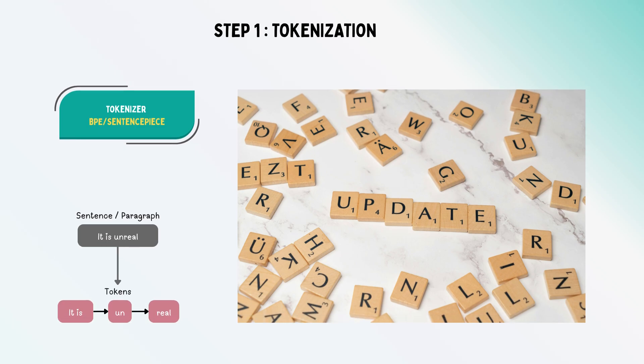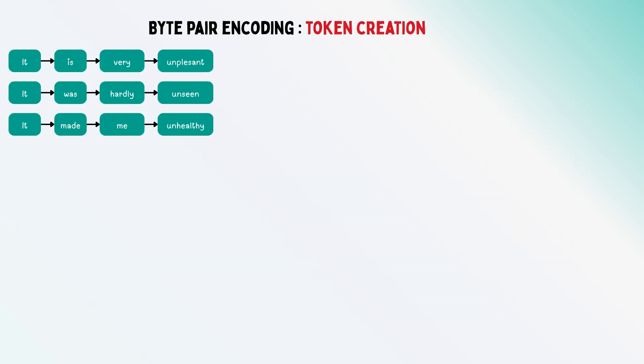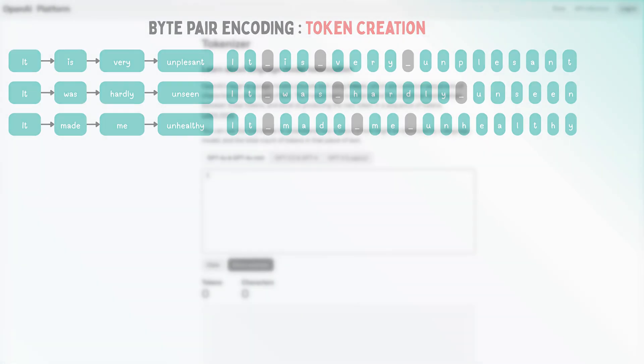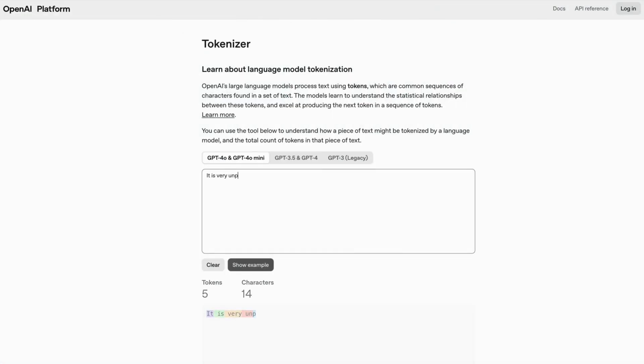In this stage, we look at how to break sentences into tokens. Byte pair encoding is one of the most common tokenizers used in OpenAI. Let's look at how it works.